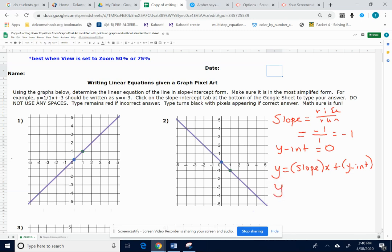So y equals, the slope was negative one. Put that in front of the x. Negative one x plus the y-intercept was zero. And guys, this mathematically is the right answer, but this will not give you a piece of the puzzle on the next page. So we've got to make sure it's as simple as possible.